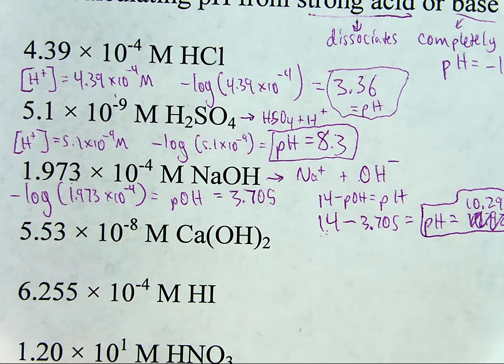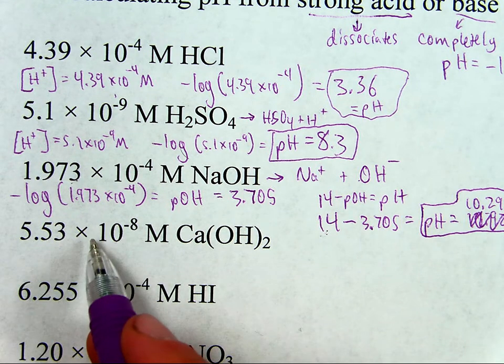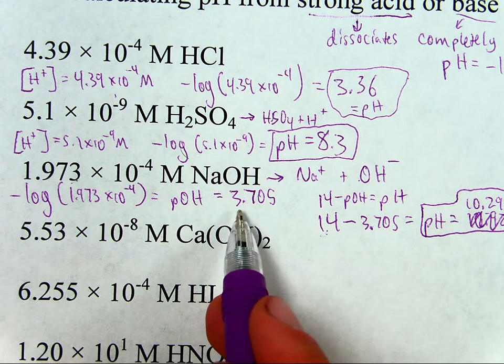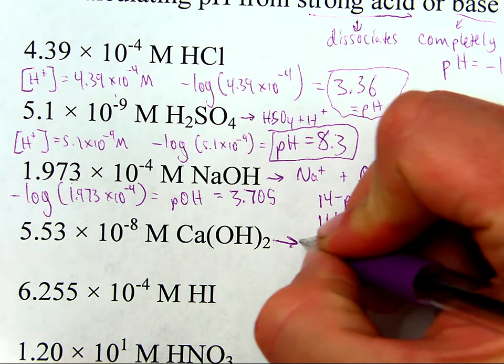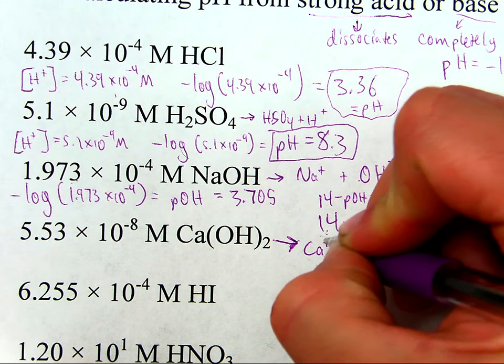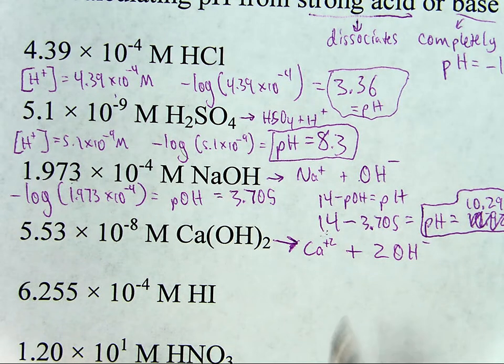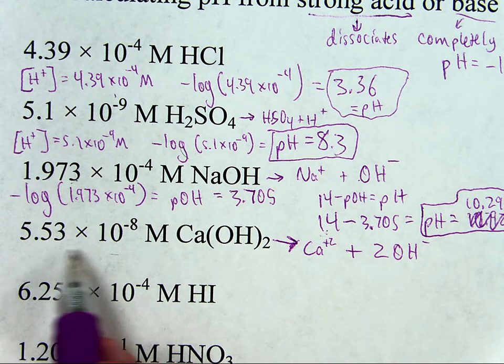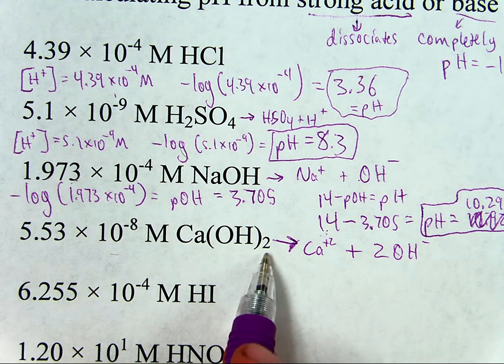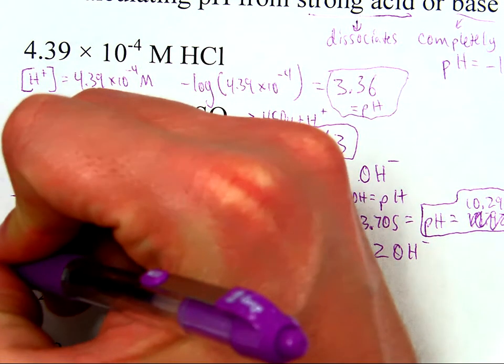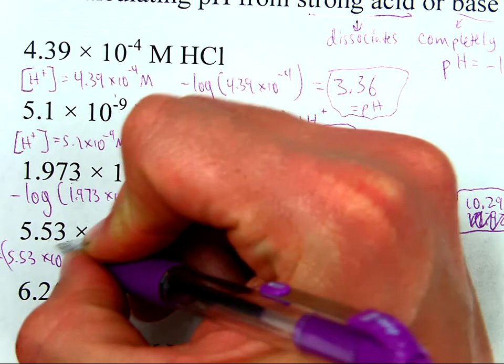Okay, now this one, it gets a little trickier. It's still the same as before. If I take negative log of this, I'm going to get hydroxide ion concentration. I'm going to take the pOH and convert it to pH. But notice, this is a little different. That is, when it dissociates in water, you're going to get one calcium ion and you're also going to get two hydroxides. That means your hydroxide concentration is twice as much as this. There's two hydroxides in every molecule. So really, concentration of hydroxide is 5.53 times 10 to the negative 8th times 2.